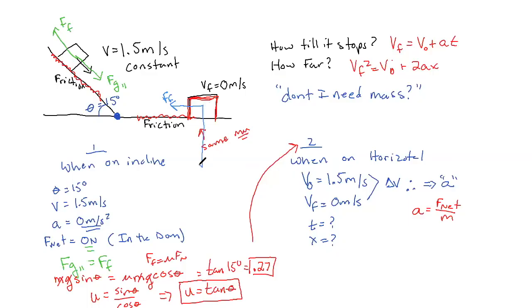gravity kept it going at a constant speed this way because it was a component of the weight. But here, we have weight coming down like this, Fg. And that is not in the DOM. That is not in the direction of motion. So the weight and gravity does not matter.